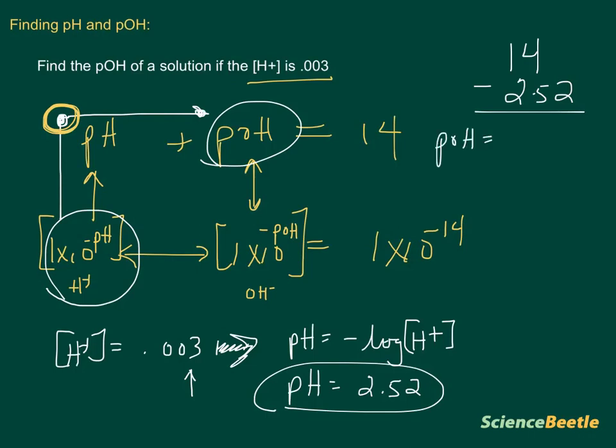And so let's go ahead and do that now. We'll subtract 14 from it. And that means that my pOH is going to be equal to 11.5. And this here is the answer to this question.